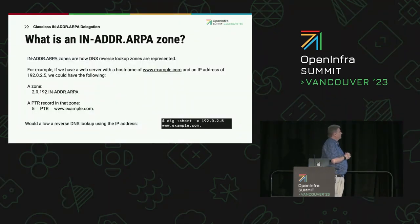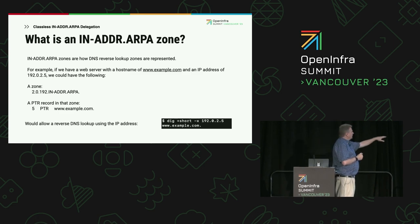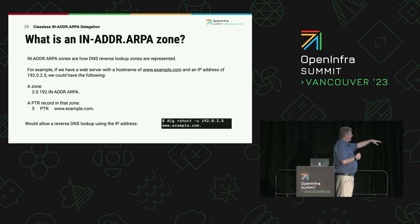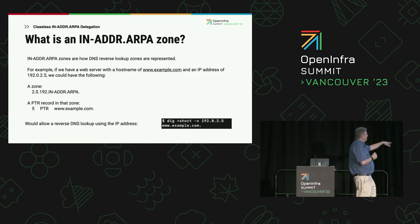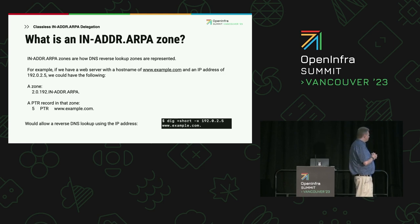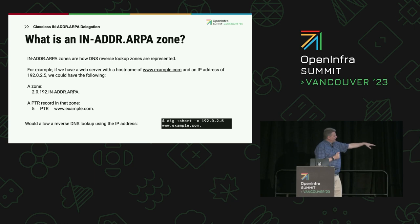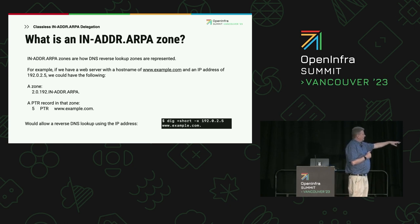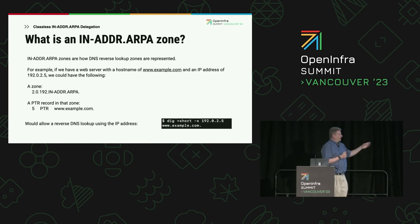A quick review of what an in-addr.arpa zone is: if you look at the zone representation, it's the IP address in reverse order under the in-addr.arpa namespace in DNS. So a pointer record — if we had an IP address of 192.0.2.5 — it would be in this zone, and the pointer record would be address 5 maps to www.example.com. You can see an example using DIG: if you use the reverse lookup, that's the response you would get based on this zone configuration.